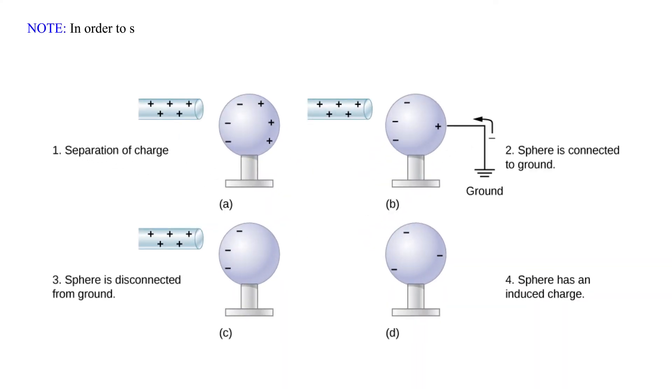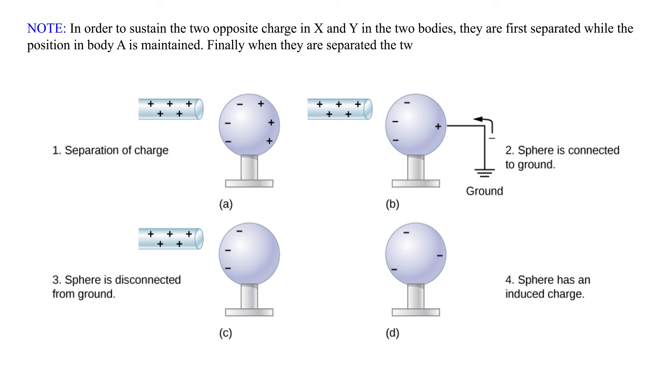Note: In order to sustain the two opposite charges in X and Y in the two bodies, they are first separated while the position in body A is maintained. Finally when they are separated, the two bodies will distribute uniformly as shown.